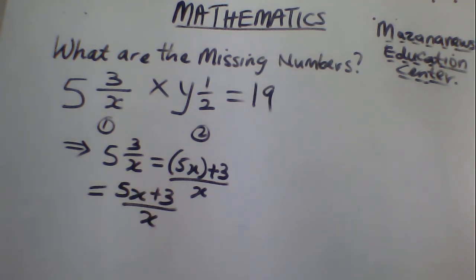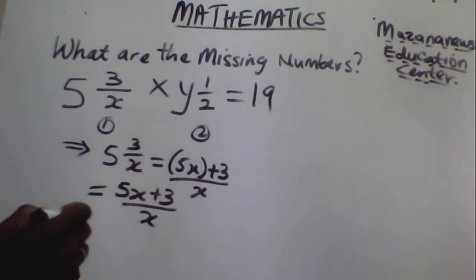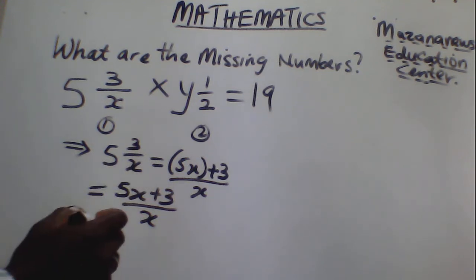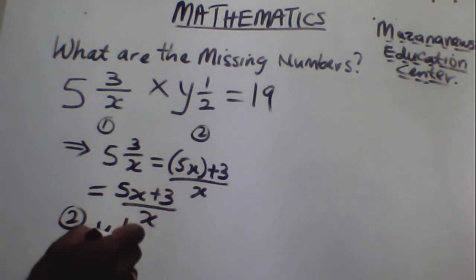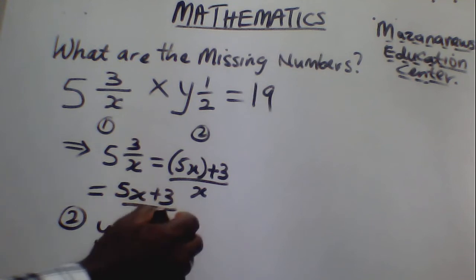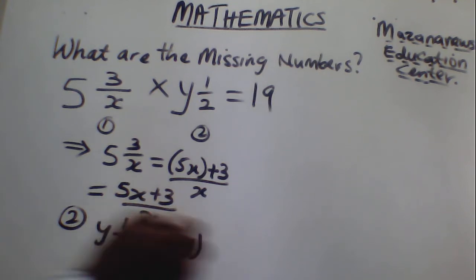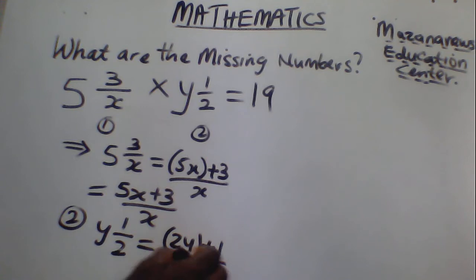Once you have gotten this, you proceed for the second. This means y — this is the whole number — and 1 over 2. It is the same: you convert it to an improper fraction. 2 times y, which gives us 2y plus 1, divided by 2. So this is the first thing you need to do.